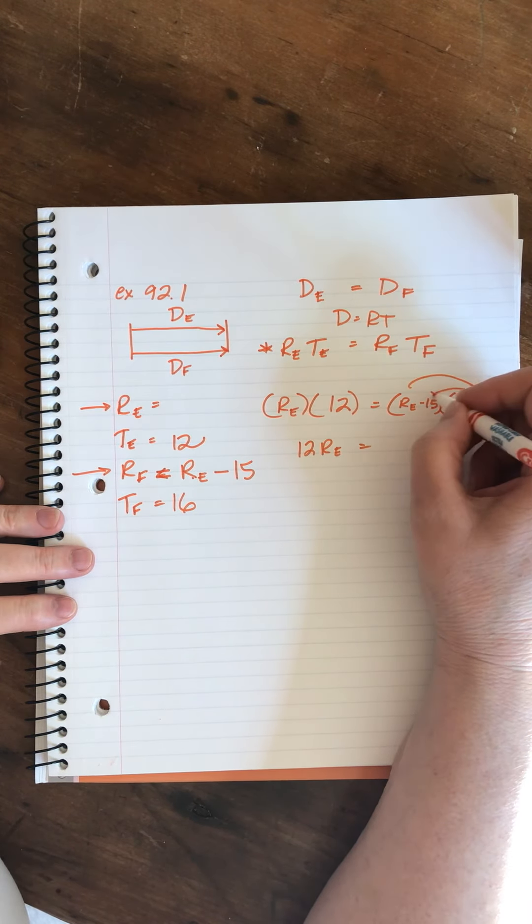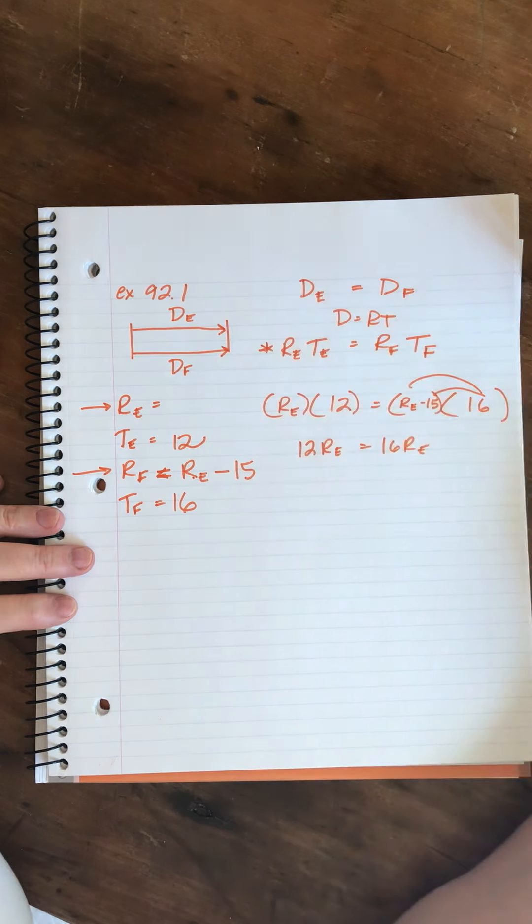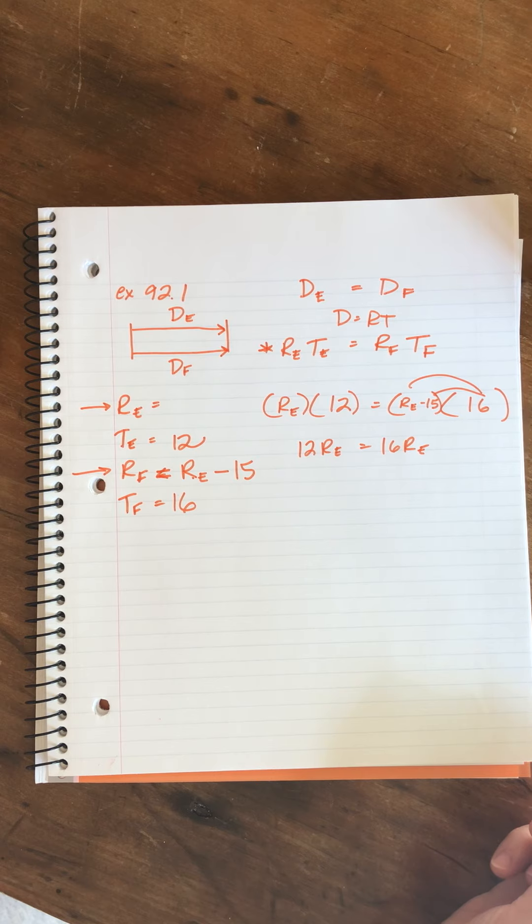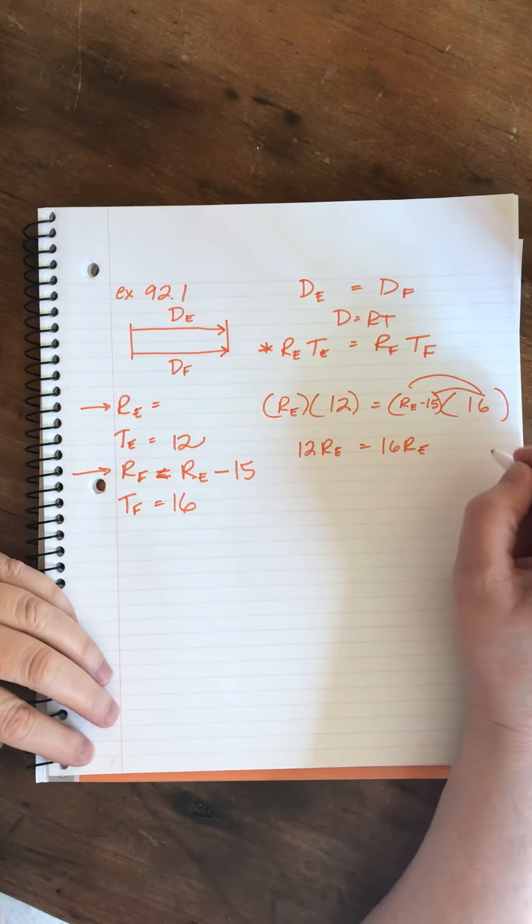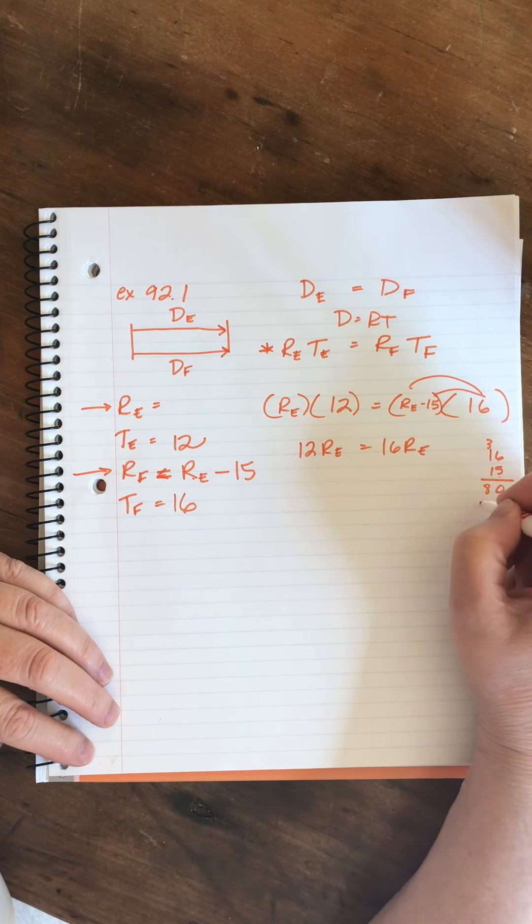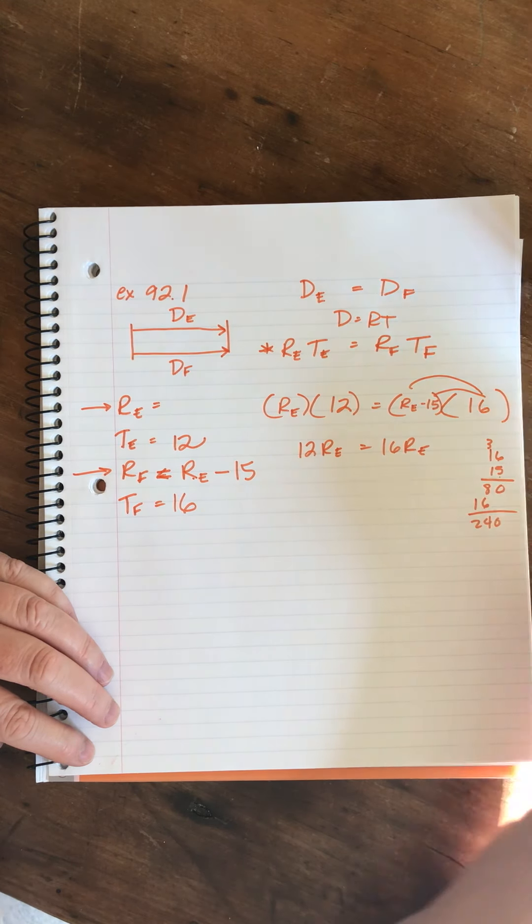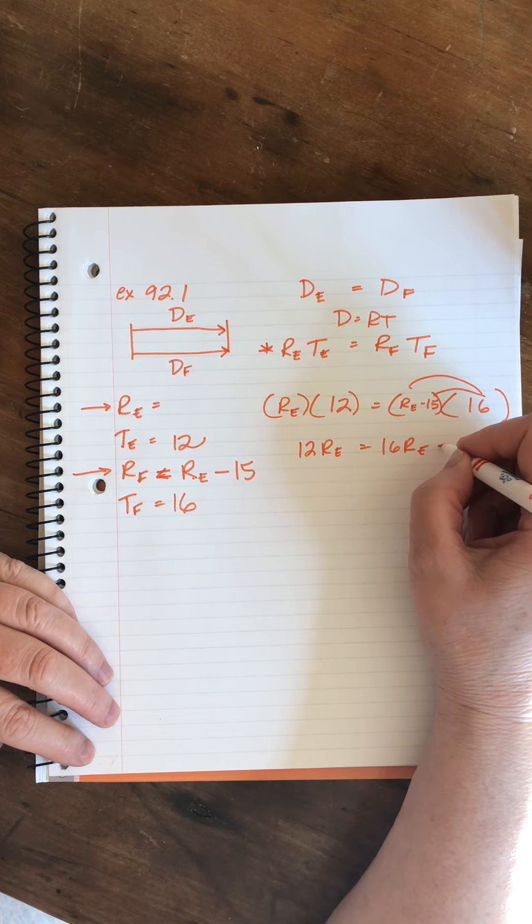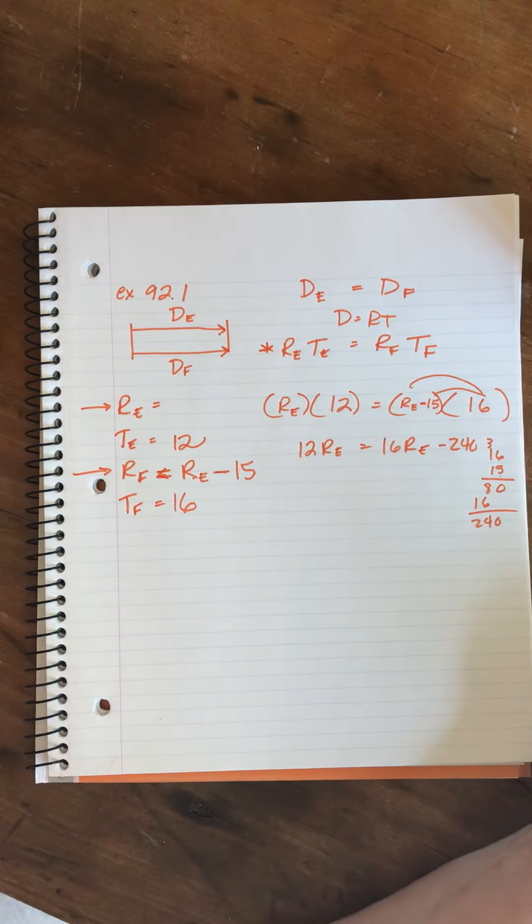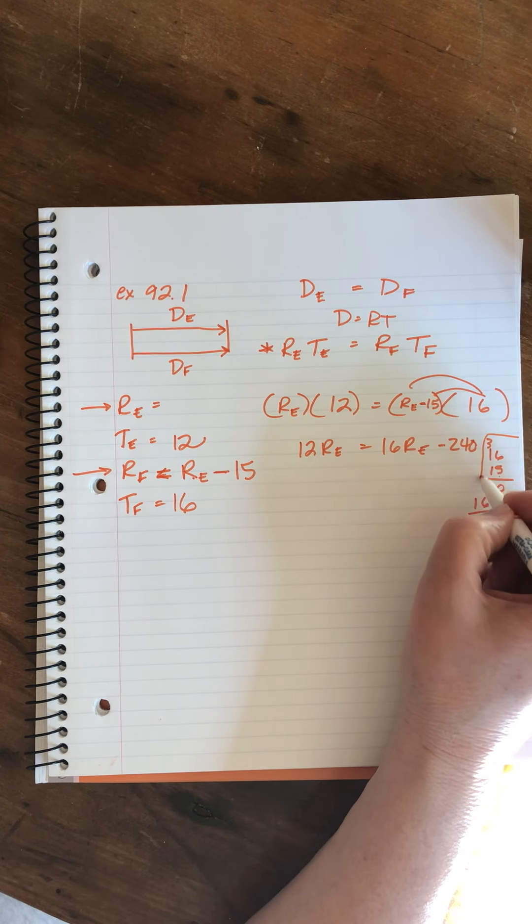I have to distribute here. 16R times E. And let's see. 16 times 15 is what I'm thinking about. 30. So, it's 240. Minus 240. There's the minus sign. And here it is over here. Good. Keep this off to the side.